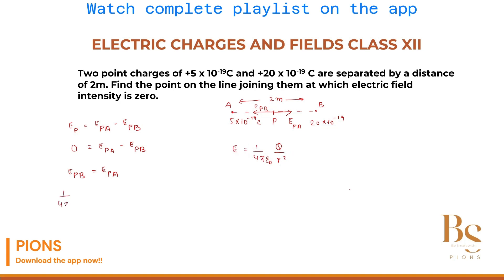Let's put here 1 by 4 pi epsilon 0. What is our first charge? Sir, first charge is 5, sorry, PB we are finding. So electric field at P due to B is charge is 20 into 10 to the power minus 19. Sir, but we don't know what is the location of PB. So let's assume from first charge, the location of point P is X meters. If this is at X, what will be the position here? 2 minus X.